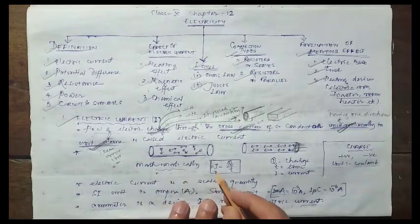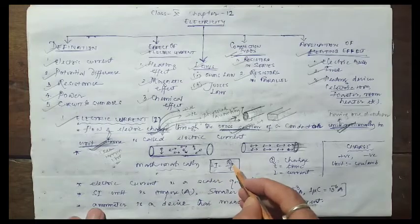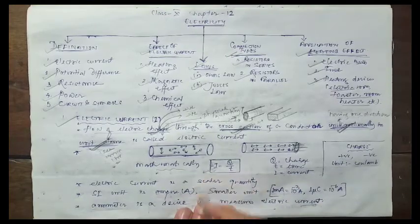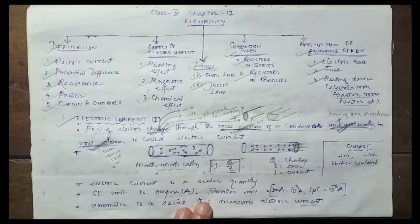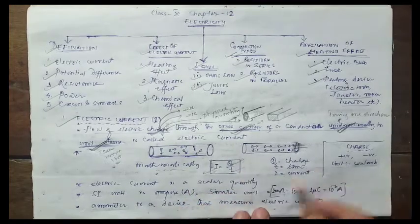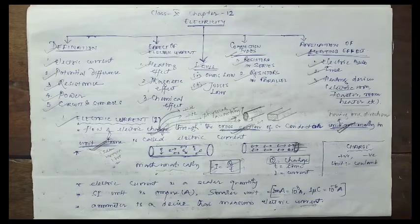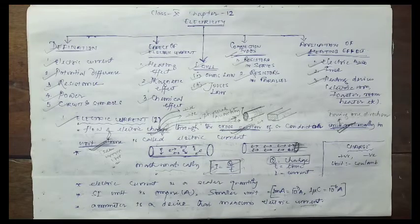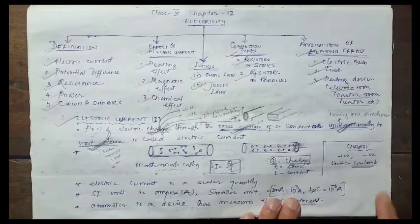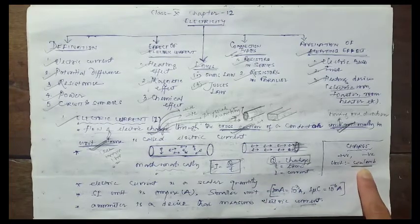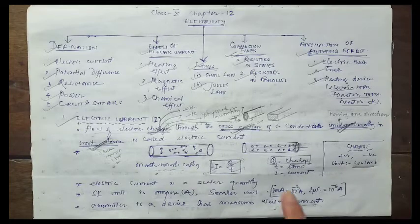Mathematically, we define electric current as I = Q/T, where I stands for electric current, Q is charge, and T is time. Charge is a physical quantity, and every physical quantity has a unit. Just like force has newtons, mass has kilograms, work has joules, and power has watts — charge also has an SI unit. We measure charge in a unit called coulomb, named after the scientist Charles-Augustin de Coulomb. So the SI unit of charge is coulomb.